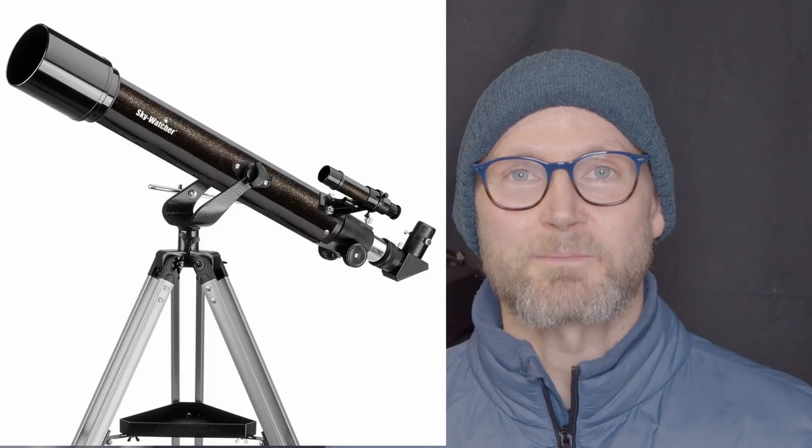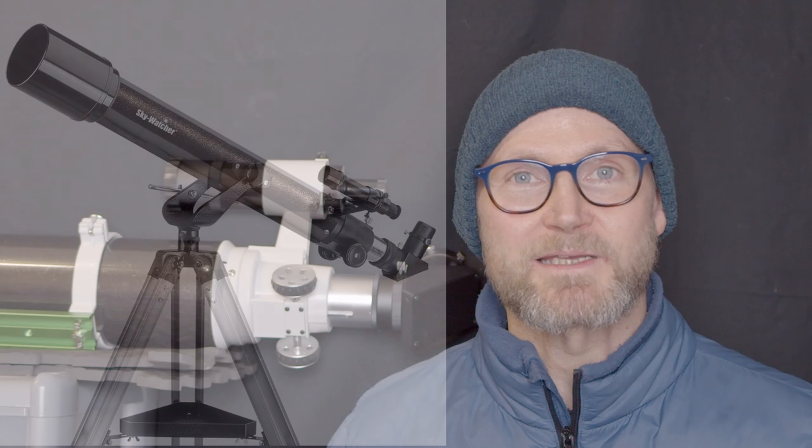euros, but you can get something like the SkyWatcher Mercury 707 that I've recently reviewed for about 120 and it comes with a mount and eyepieces to get you going. And it's good enough for looking at the moon and planets and some very bright deep sky objects. It just depends what you want to do.